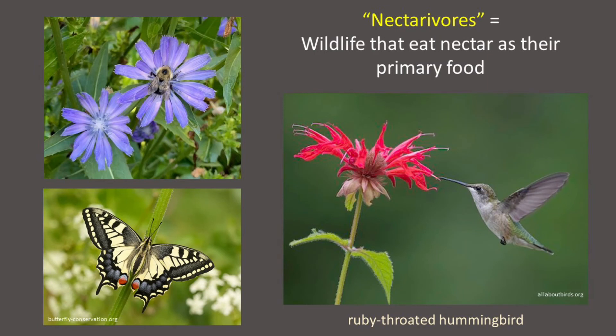Wildlife that eat nectar as their primary food source are called nectarivores. Insects, particularly the pollinating insects, represent nearly all of the nectarivores in New England. The ruby-throated hummingbird is really the only true vertebrate nectarivore we have in New England.